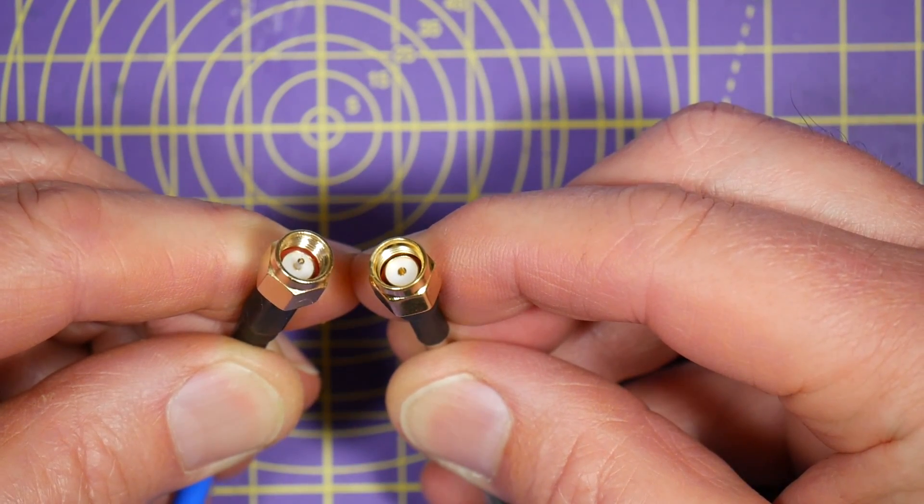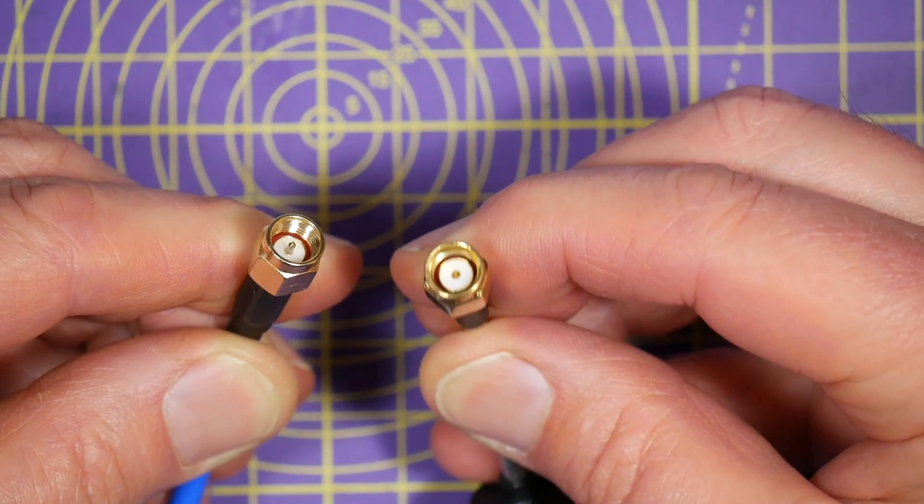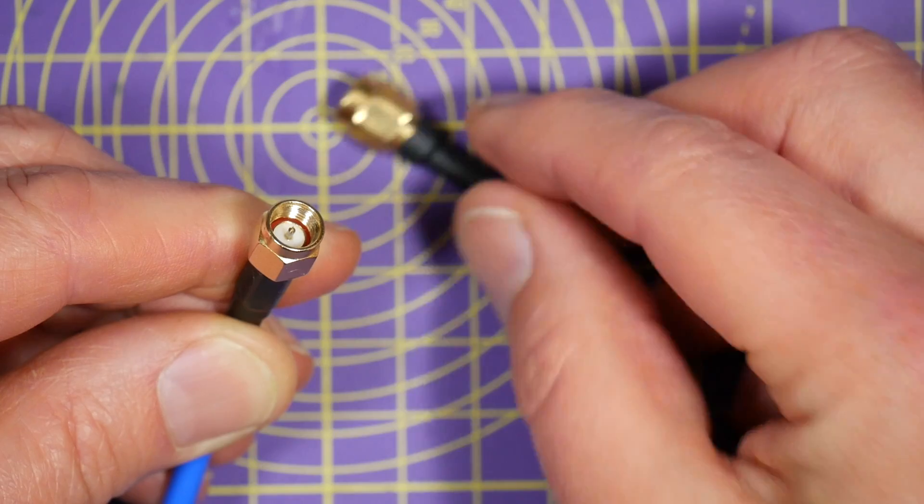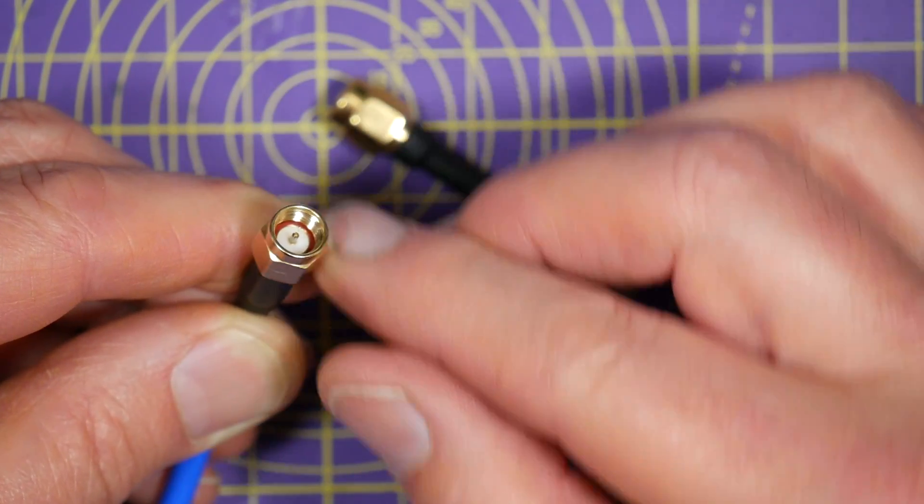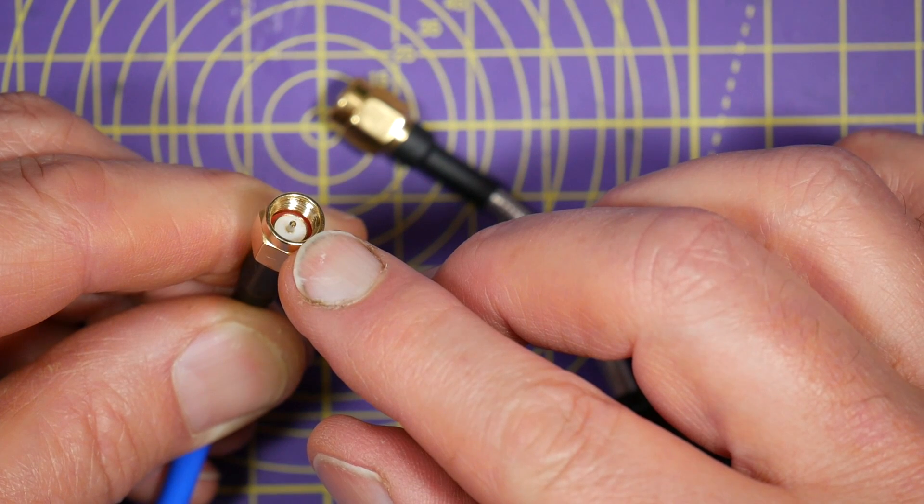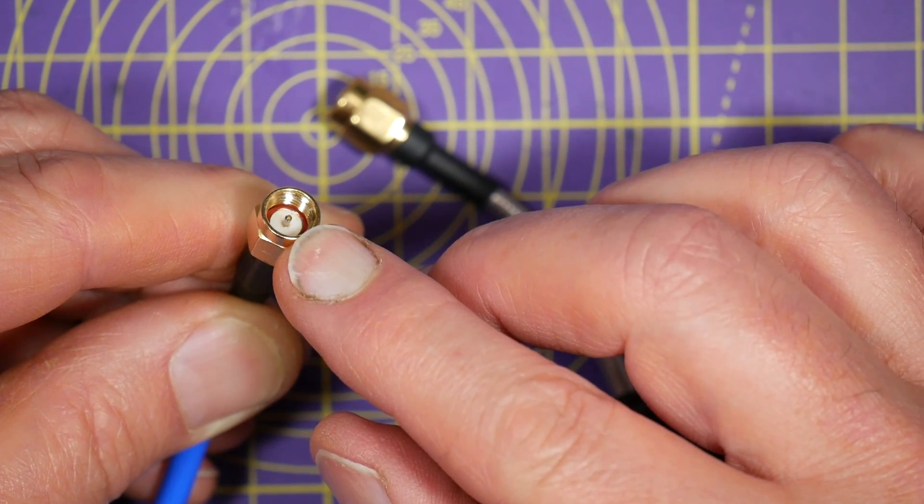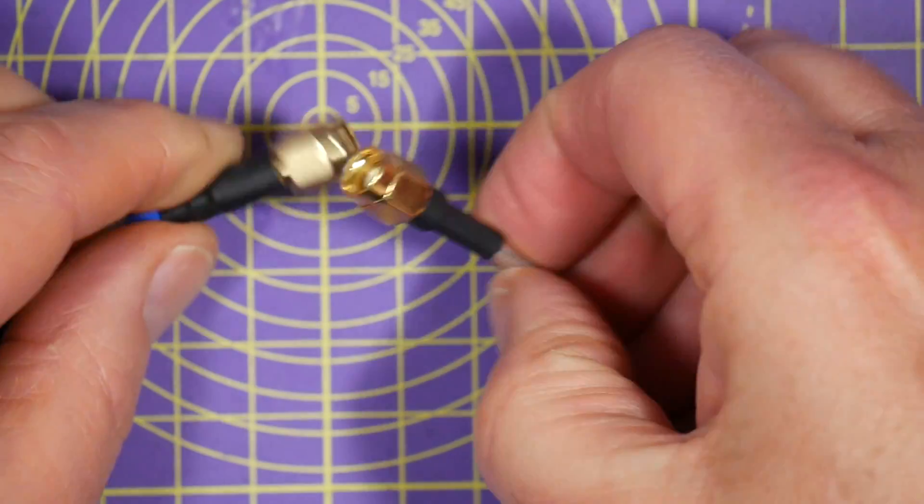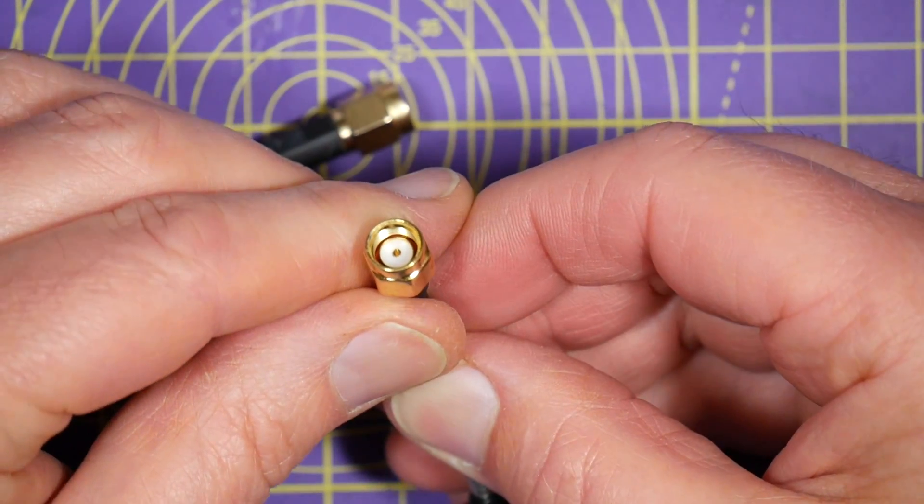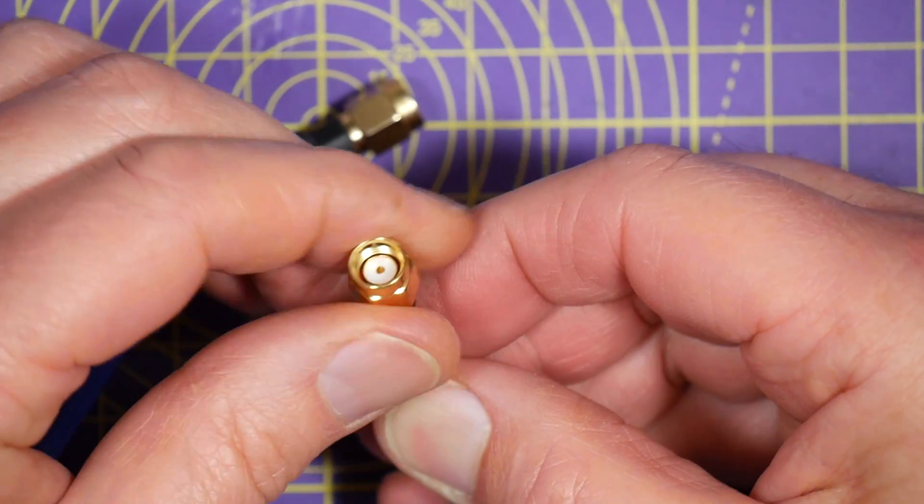So if we look at these two, this is an RP-SMA, and this is an SMA. If you look very closely, this is a male connector. It's got a pin in the middle. And this is an SMA connector, an SMA male. This is an RP-SMA, and it's effectively a female. There's no pin. What you've got is a socket there.